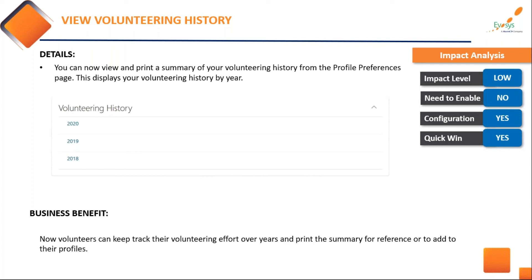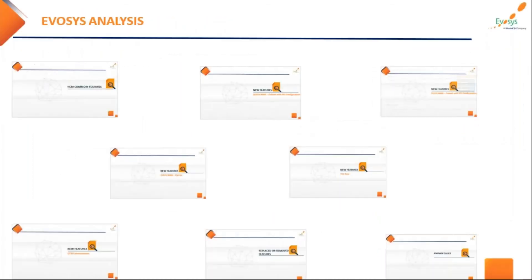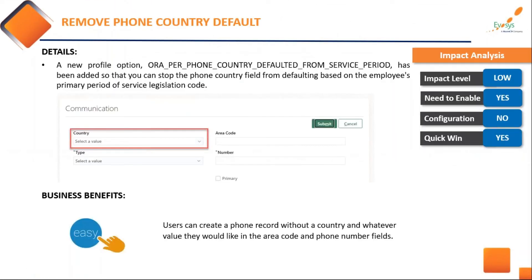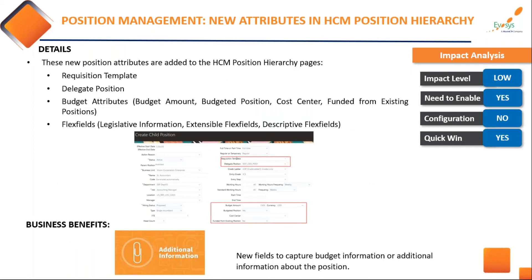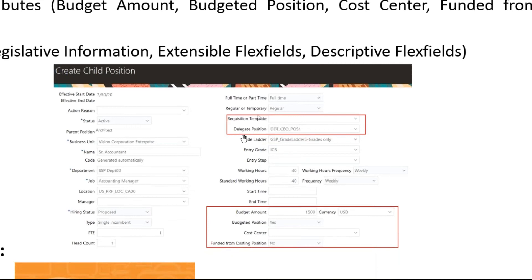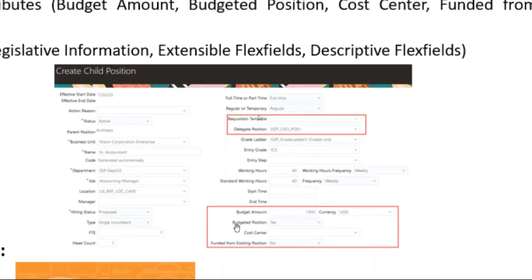Volunteering history is available for those who have implemented this module — volunteers can now keep track of whatever volunteering they've done in the past and view or print a summary. For organizations where people work from home, there is now the ability to allow employees to enter phone numbers without defaulting to the organization's location — you can enable them to enter a different country's code and phone number, but you need to enable a profile option to do so. Under position management, there are also new attributes visible as part of the position hierarchy, including budget details, requisition template, and delegate position details.